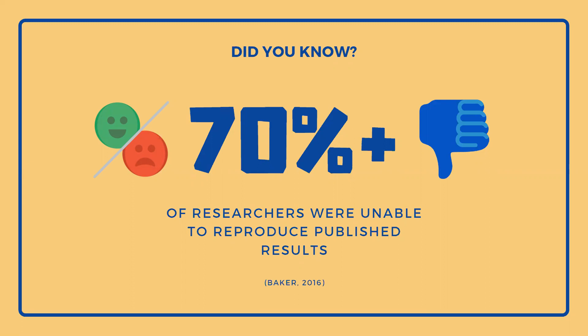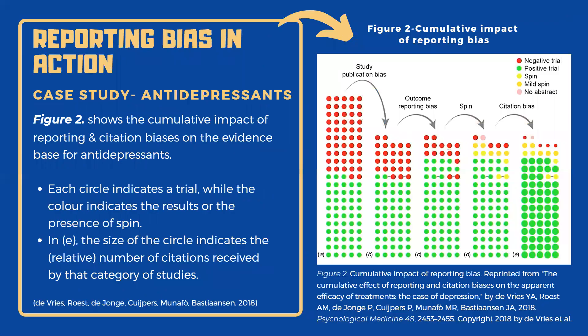Now let's take a look at a case study on drugs used for the treatment of depression and watch publication bias, outcome reporting bias, spin and citation bias in action. Professor DeVries and colleagues assembled a cohort of 105 placebo-randomised control trials for depression from the FDA database. Pharmaceutical companies are required to pre-register all drug trials to obtain FDA approval, so all trials with non-significant results or even unpublished trials are easily accessible. In figure two, column A displays the initial complete cohort of trials, while columns B through E show the cumulative effect of biases in play in the body of evidence.